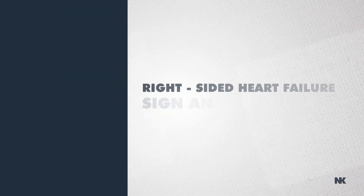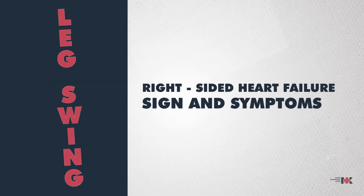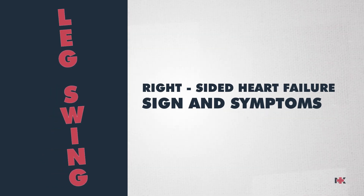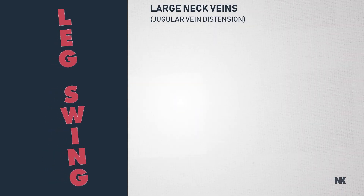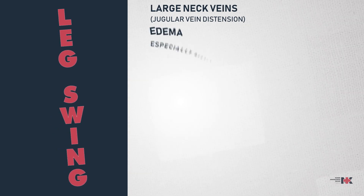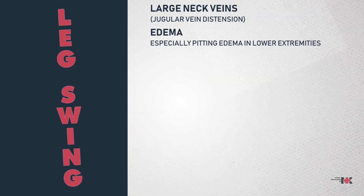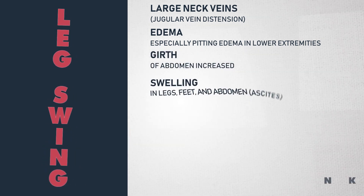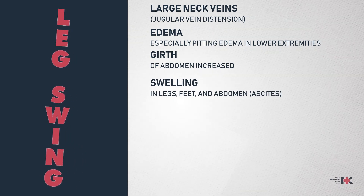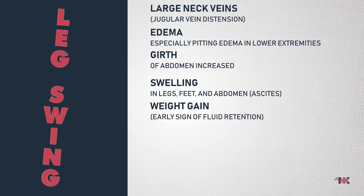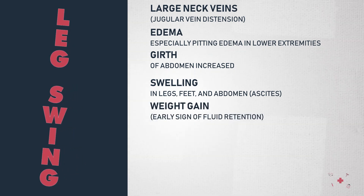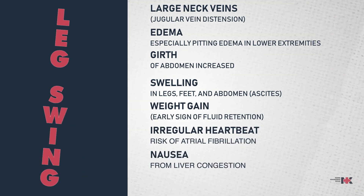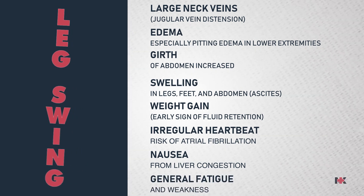We have another acronym: LEG SWING, because one of the signs of right-sided heart failure is swelling of the legs and other parts of the body. L for large neck veins, or jugular vein distension (JVD); E for edema, especially pitting edema in lower extremities; G for abdominal girth increase due to fluid; S for swelling of the legs, feet, and abdomen including ascites from the liver; W for weight gain, which is an early sign of fluid retention — monitor daily weights; I for irregular heartbeat and higher risk for AFib; N for nausea from liver congestion; and G for general fatigue and weakness, because our heart isn't really working.